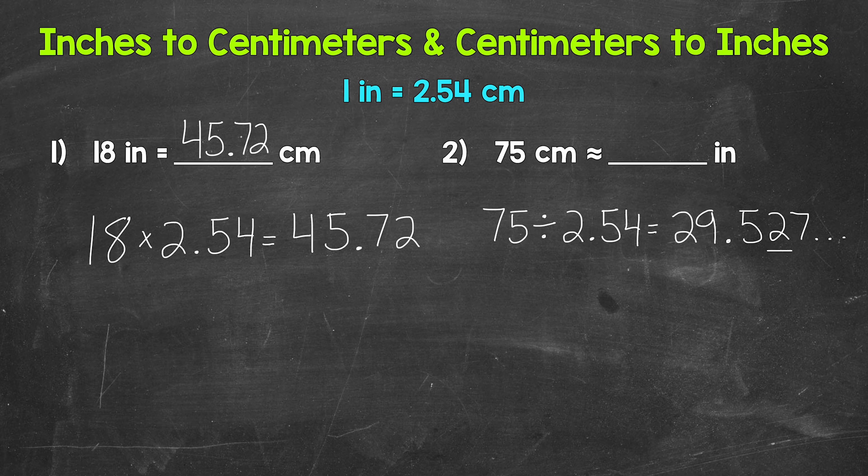We have a two in the hundredths place with a seven in the thousandths. So we round up here. 75 centimeters is approximately 29.53 inches. So we have that approximately sign there instead of an equal sign because we rounded. So again, 75 centimeters is approximately 29.53 inches.